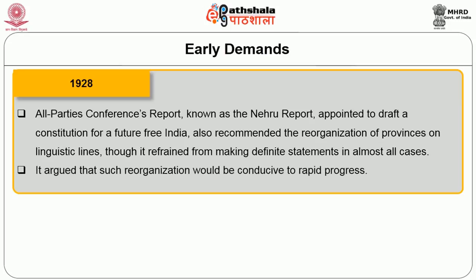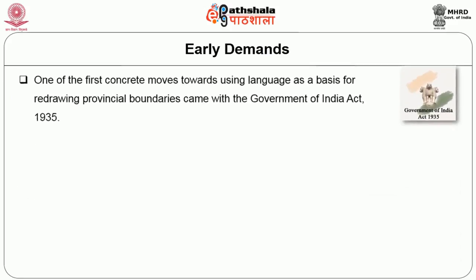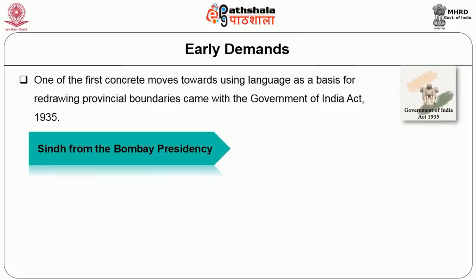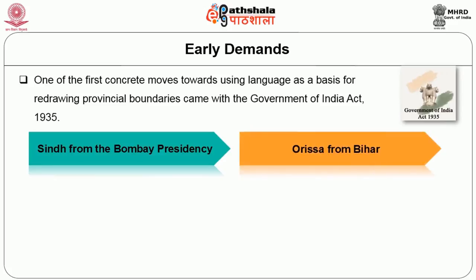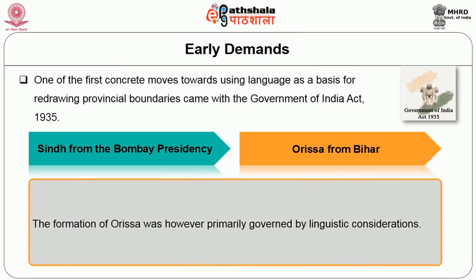Later in 1928, the All Parties Conference Report — known as the Nehru Report — appointed to draft a constitution for a future free India, also recommended reorganization of provinces on linguistic lines, arguing it would be conducive to the rapid progress of colonial India and would help in nation building when India became independent.